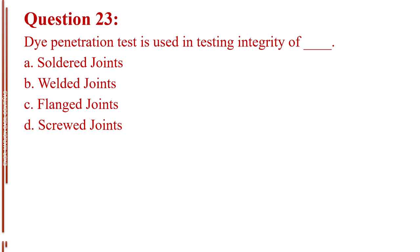Question number 23. Die penetration test is used in testing integrity of blank. Letter A, solder joints. Letter B, welded joints. Letter C, flanged joints. Letter D, screwed joints. The answer is Letter B, welded joints.